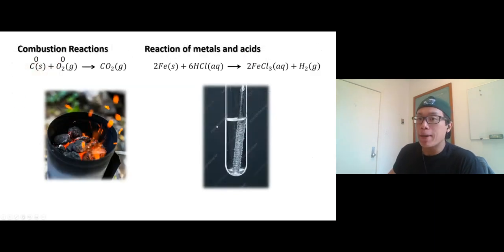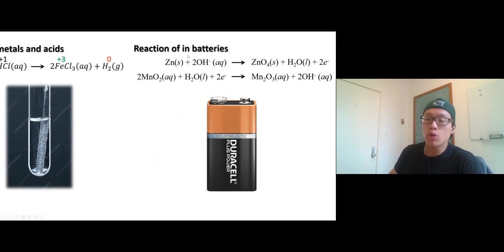A combustion reaction is a type of redox reaction. Pretty much all combustion reactions are redox reactions, because carbon zero and oxygen gas also zero—carbon loses four electrons to oxygen. Carbon becomes plus four and oxygen minus two. Reaction of metal and acid: iron starts out with the metal iron, elemental iron, oxidation is zero. Hydrogen plus one. Iron loses six electrons to the hydrogen, becomes plus three and hydrogen zero. The reaction between metal and acid. We also have the reaction in battery cell, that's also a redox reaction. One of them loses electron, one of them gains electron.